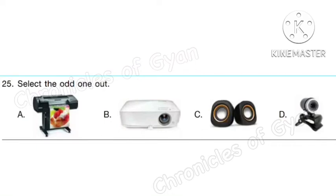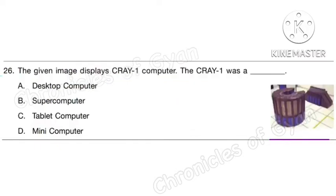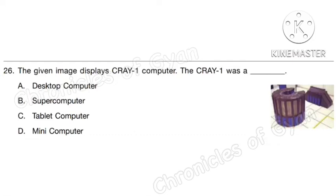Question 25. Select the odd one out. Option A: printer, option B: projector, option C: speakers are output devices. Option D: webcam is an input device. So the correct answer is option D: webcam. Question 26. The given image displays the Cray1 computer. The Cray1 was named after its founder Seymour Cray and was a supercomputer manufactured around 1975, used for large-scale scientific applications. The correct answer is option B: supercomputer.